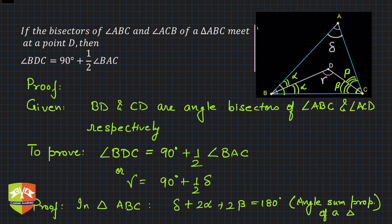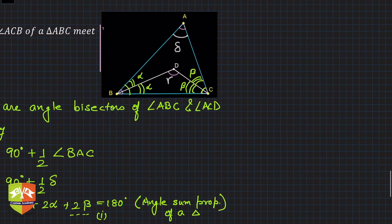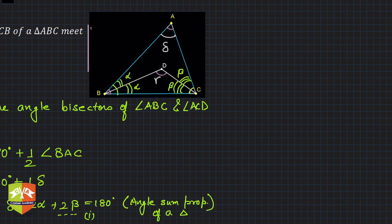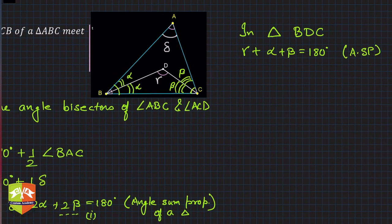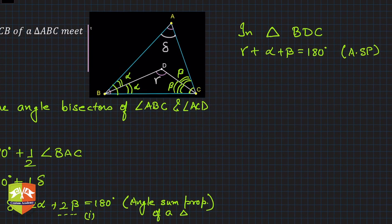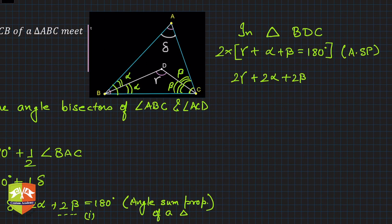Next, consider triangle BDC. The same angle sum property holds: γ plus α plus β equals 180 degrees. This is again the angle sum property of a triangle. Now I multiply this whole equation by 2, and we get 2α plus 2β equals 360 degrees minus 2γ. Let this be equation 2.